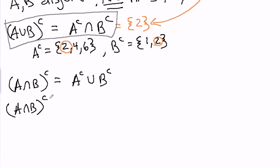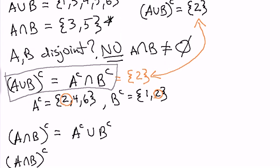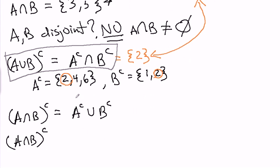We have A union B. Sorry, A intersect B. We got this over here, right? So the complement of that is all outcomes that aren't in A intersect B. So basically everything but 3 and 5. So we have 1, 2, not 3, 4, not 5, and 6.